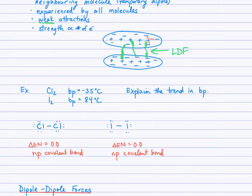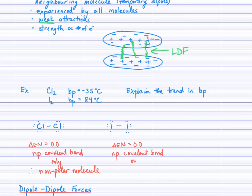To determine the polarity of the molecule: when there's only one bond, that bond determines the overall molecular polarity. If there's no shift or separation of charge, no shift in electron density, the overall molecule will be non-polar. The non-polar covalent bond means Cl2 is a non-polar molecule. The same analysis applies to I2 — having only non-polar bonds present, it is also a non-polar molecule. So we have two non-polar molecules.